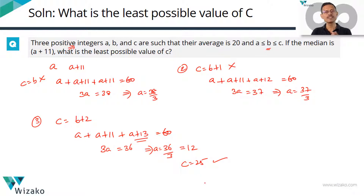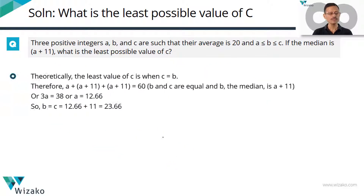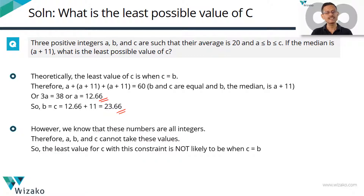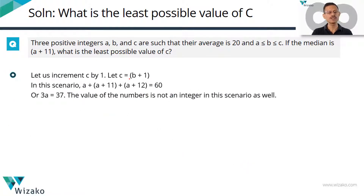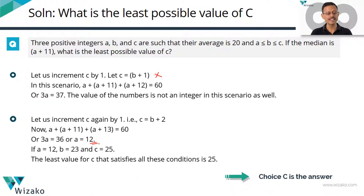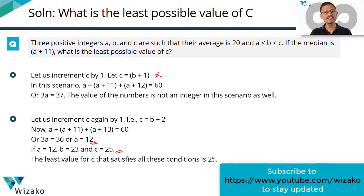We iterated starting with c = b: that gave a = 12.66, not an integer, so it was ruled out. Then c = b + 1 gave 3a = 37, so a = 12.33, also not an integer, ruled out. Then c = b + 2 gave a = 12, an integer, and c = 25, also an integer. The least integer value of c, given all conditions, is 25. Choice C is the correct answer.